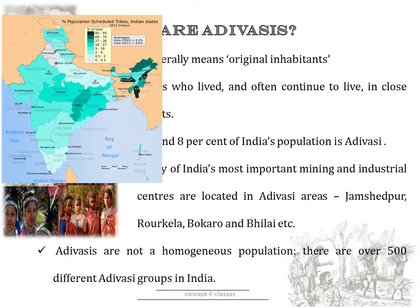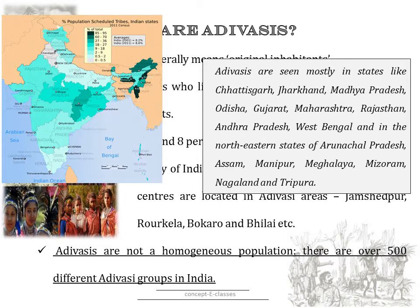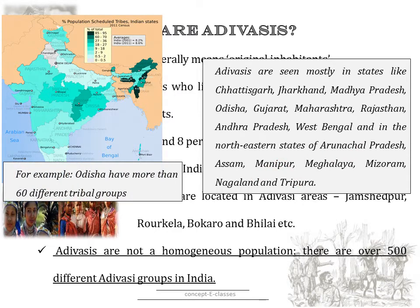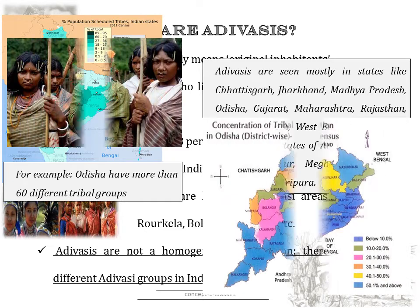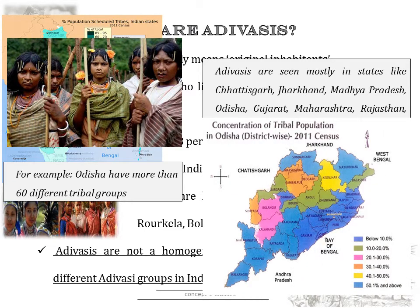Adivasis are not a homogeneous population — they don't all look alike or belong to the same kind. There are about 500 different Adivasi groups in India. Adivasis are seen mostly in states like Chhattisgarh, Jharkhand, Madhya Pradesh, Odisha, Gujarat, Maharashtra, Rajasthan, Andhra Pradesh, West Bengal, and in the northeastern states of Arunachal Pradesh, Assam, Manipur, Meghalaya, Mizoram, Nagaland and Tripura. For example, Odisha alone has more than 60 different tribal groups. These Adivasi societies are most distinctive because there is very little hierarchy among them, making them radically different from communities who believed in caste.